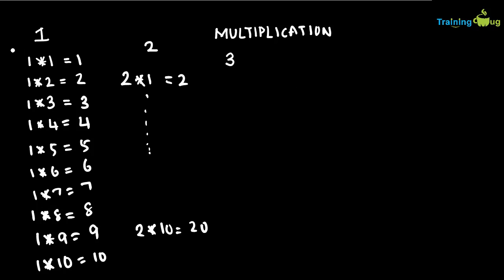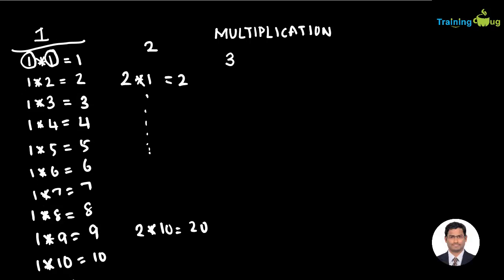The logic is very simple. If we closely understand this program, we need two variables: one to store the outer value (starting at 1), and another variable incrementing from 1 to 10. After the inner variable increments, we multiply both numbers — 1 into 1, then 1 into 2, 1 into 3 — giving the result. After iterating to 10, we increment the outer variable to 2, and the inner variable starts again from 1 to 10. This is a simple example of how nested for statements work.